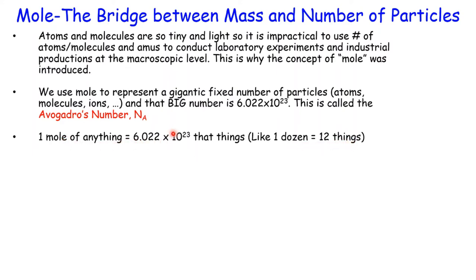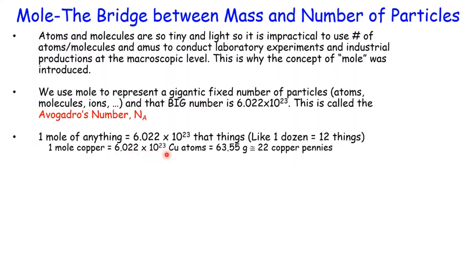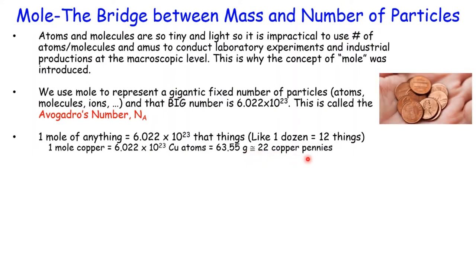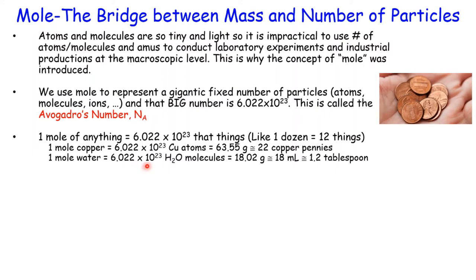One mole of copper contains Avogadro's number of copper atoms, and that many copper atoms weighs 63.55 grams — about the weight of 22 pennies made of copper. One mole of water contains 6.022 times 10 to the 23rd water molecules, and that is 18.02 grams. With the density of water at 1 g/mL, that would be about 18 milliliters — a little more than a tablespoon.